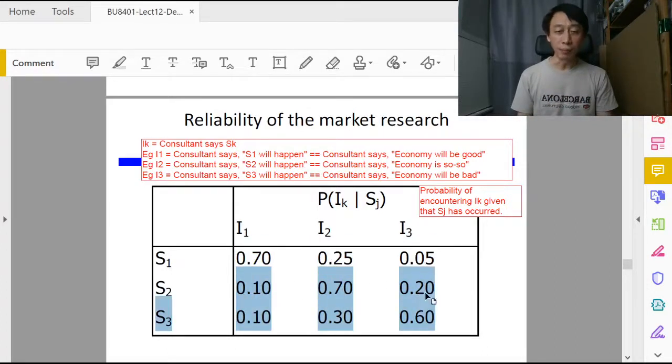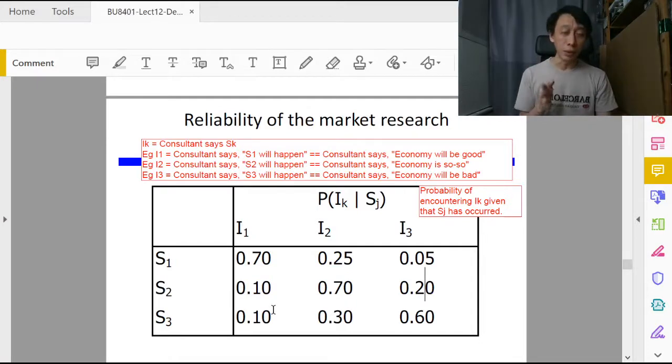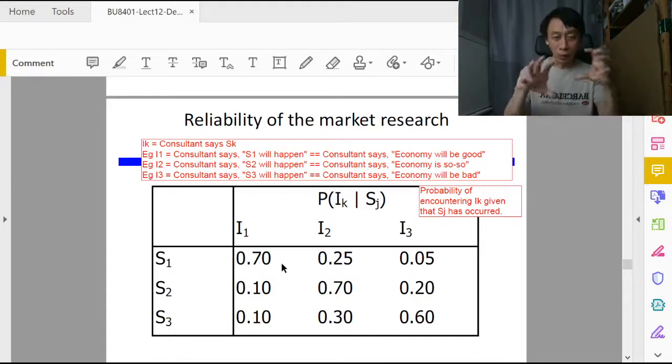And for each row same thing, right, they all add up to one, not for the column. So the columns need not add up to one or may even exceed one. So that's to do a sanity check whether this reliability matrix is valid or not.